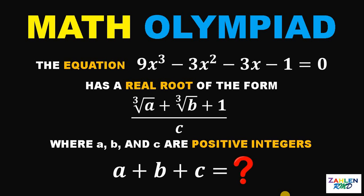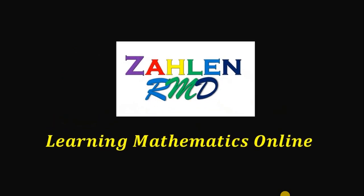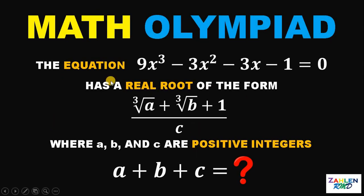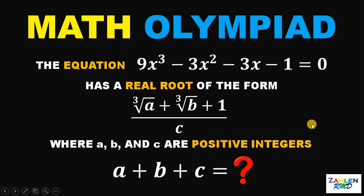Good day everyone, here's our math challenge for today. The equation 9x cubed minus 3x squared minus 3x minus 1 equals 0 has a real root of the form cube root of a plus cube root of b plus 1 over c, wherein a, b, and c are positive integers. The question is: what is the value of a plus b plus c?